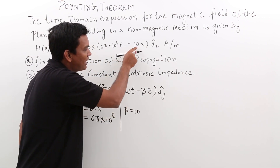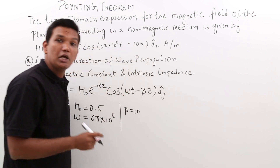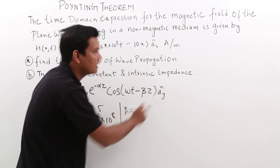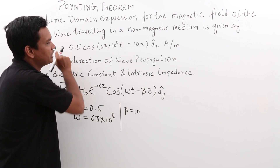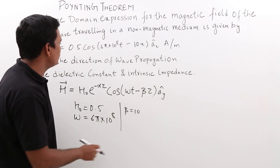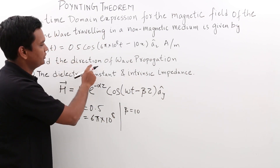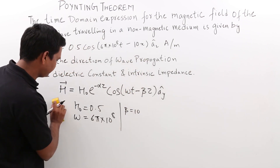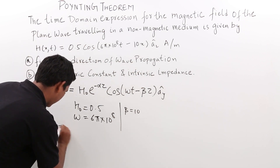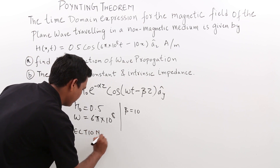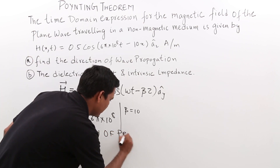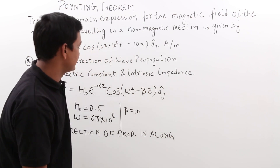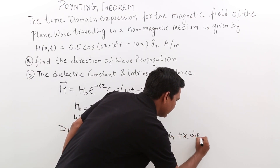In this case, since it is minus 10x, the wave is propagating in the plus x direction. The variation of magnetic field for the standard equation is along the y-axis, while for the given question it is along the z-axis. Therefore, we have concluded the first part: the direction of wave propagation is along the plus x axis.